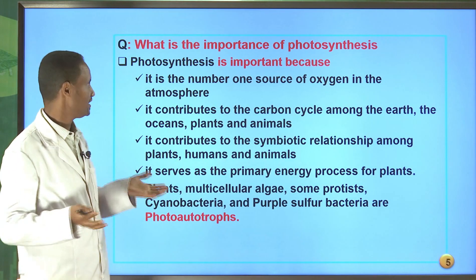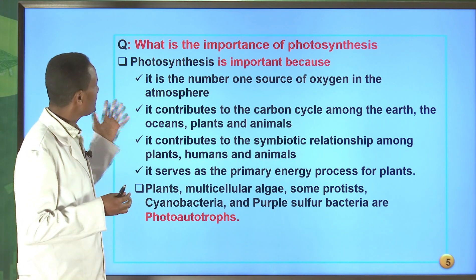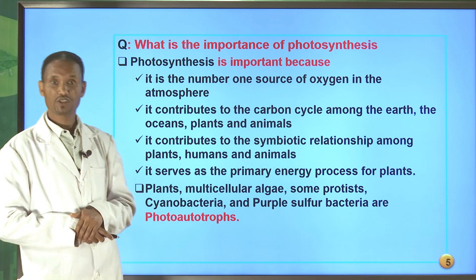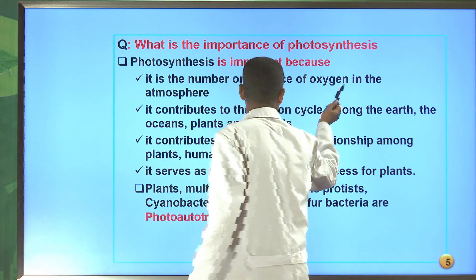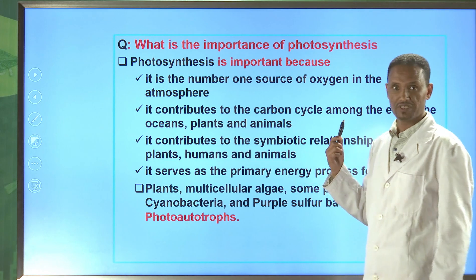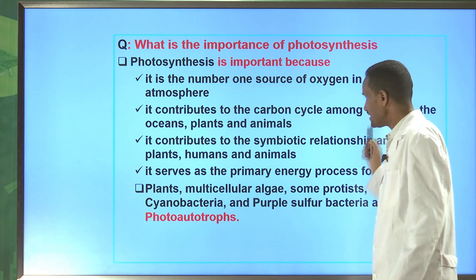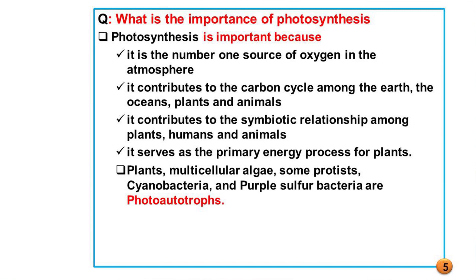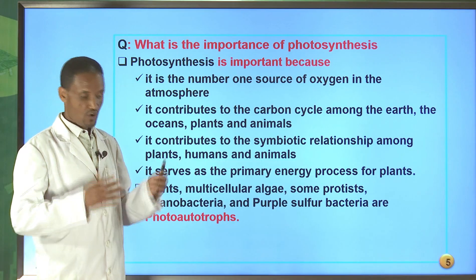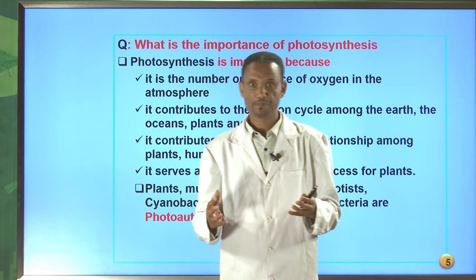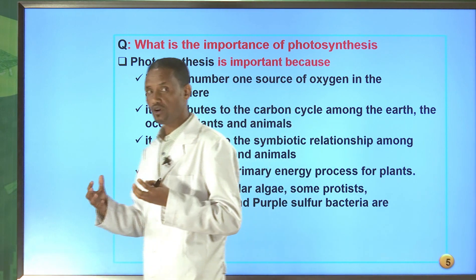What do you think the importance of photosynthesis? Some points on the importance of photosynthesis: it is the number one source of oxygen in the atmosphere. It also contributes to the carbon cycle among earth and ocean, plants and animals. Photosynthesis also contributes to the symbiotic relationship among plants, humans, and animals. It serves as the primary energy process for plants. Plants, multicellular algae, some protists, cyanobacteria, and purple sulfur bacteria are photoautotrophs — organisms that can use a photon or light for the process of photosynthesis.